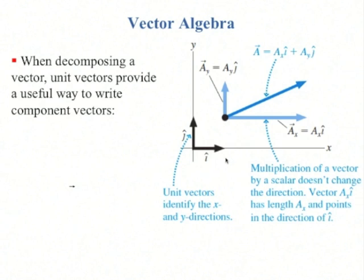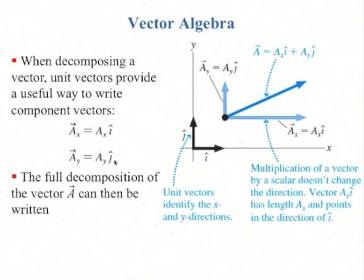When you decompose a vector, it's useful sometimes to write each vector as being the magnitude, or the component, times i hat or j hat. You can write the full vector a as being a vector of a sub x vector plus a sub y vector, or as a sub x times i hat plus a sub y times j hat.